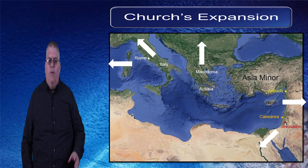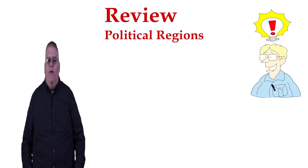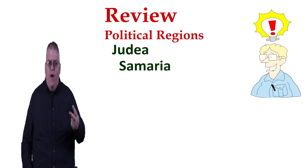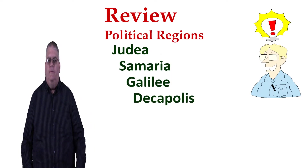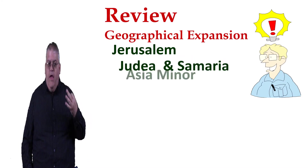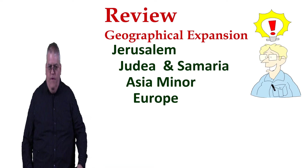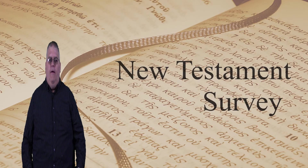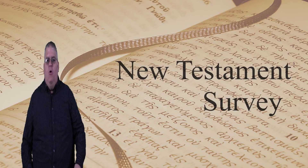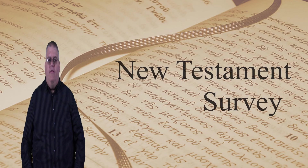So those are the major points of geography to help you visualize and understand the setting of Jesus and the geographical expansion of the church that we see in the New Testament. Let's review: the major political areas of the promised land are Judea, Samaria, Galilee, and the Decapolis. And the major geographical areas of the expansion of the church are Jerusalem, Judea and Samaria, Asia Minor, and Europe. Of course, there are many other details of places and geographical features in the New Testament, but hopefully you now have the big picture outline to help you fit in the details when you read and study the New Testament. In the next section, we'll give a brief overview of the literature of the New Testament — the organization of the books of the New Testament itself. Thanks for watching.